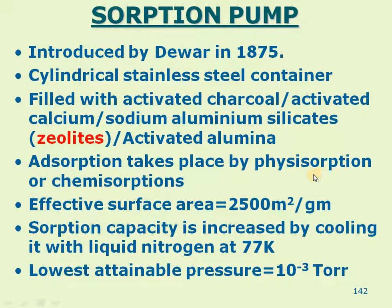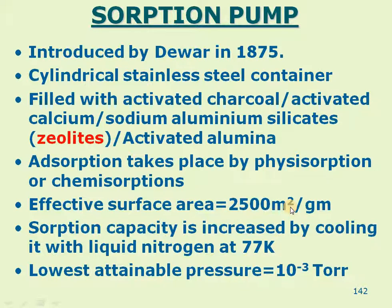Adsorption takes place by either physisorption or chemisorption. Physisorption involves physical forces and physical actions, while chemisorption involves chemical actions — and chemical activity is very important here. One key value to note is that the effective surface area of zeolites is 2,500 square meters per gram. This is tremendously high — one gram of this material provides 2,500 square meters of surface area, which means the material must be highly spongy and highly cavity-abundant.